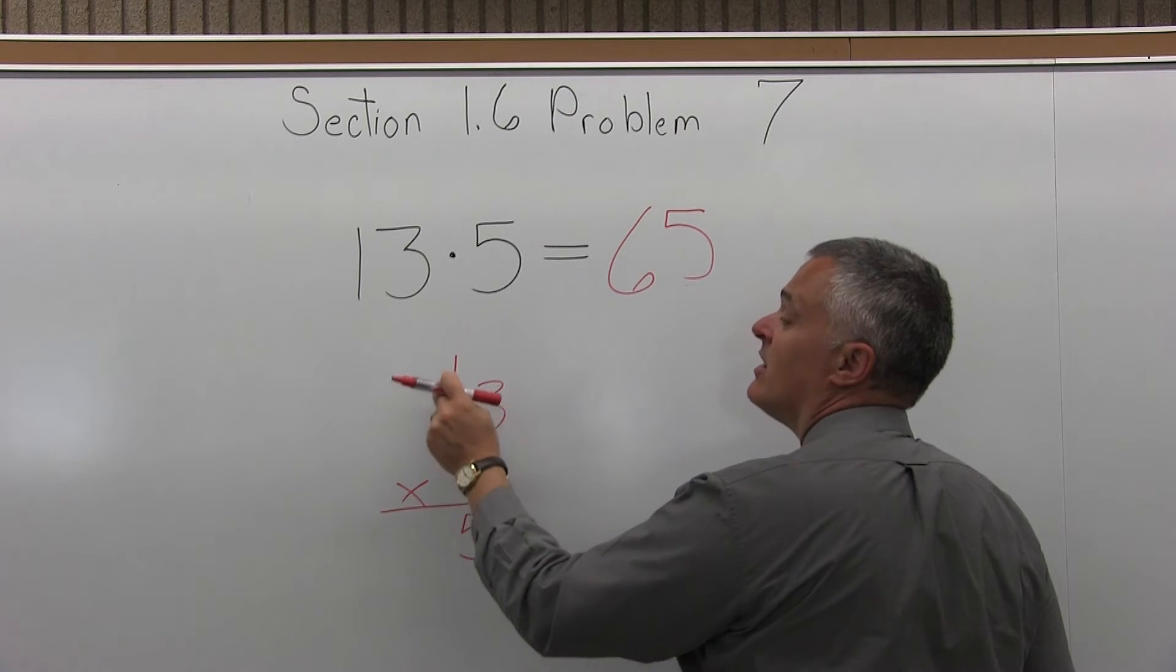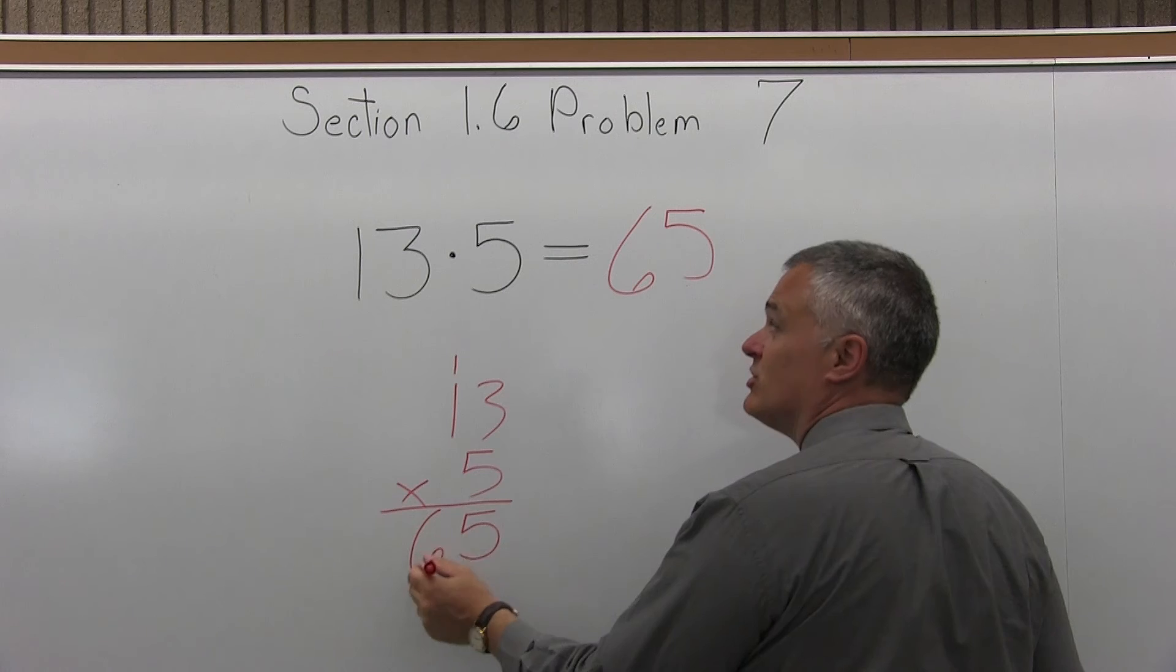5 times 1 is 5, plus the 1 that you carried, 5 plus 1 more is 6. So you do get 65.